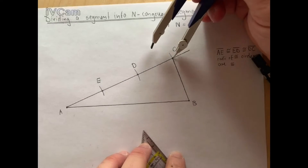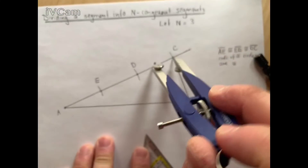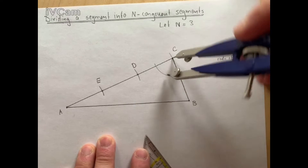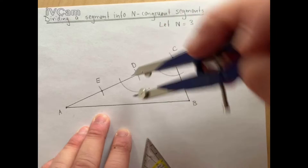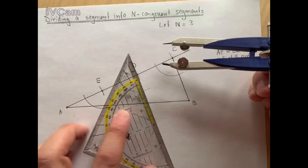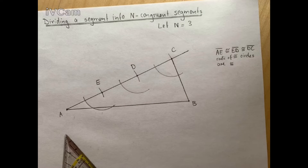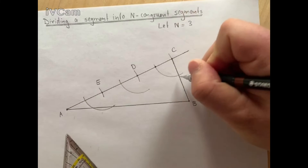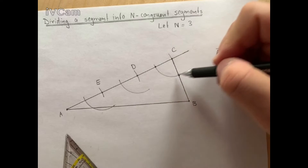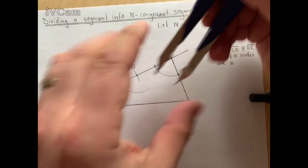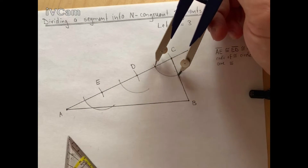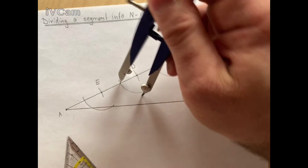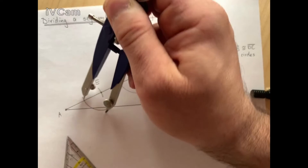We already know how to copy angles. First, we draw an arc at C. We keep the same radius on the compass and draw another arc from point D, and another arc from point E. We have to make sure the arc is big enough so that it goes through any parallel lines here. Then we measure the distance between the two intersection points of the arc and segments AC and BC. Once we measure the distance, we can copy the angle.